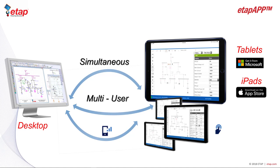Using the ETAP app, you can collect data, build and modify the one-line, take pictures, and transfer the collected information to the ETAP software to perform electrical system design and analysis, including all your studies such as load flow, short circuit, protection coordination, as well as arc flash.